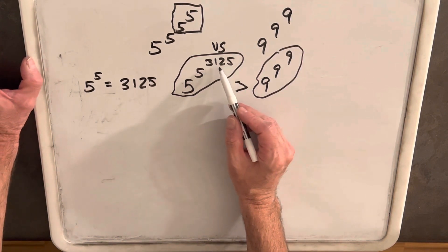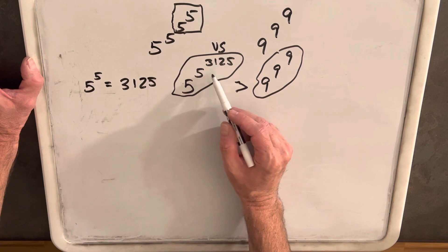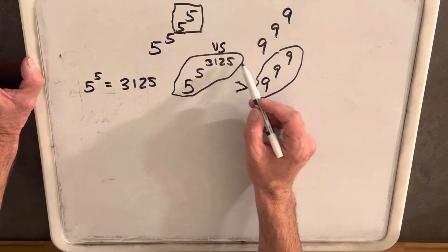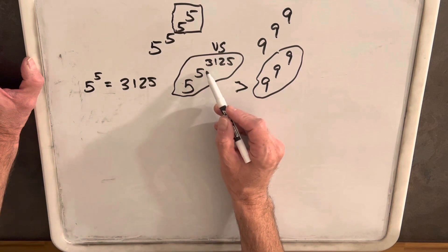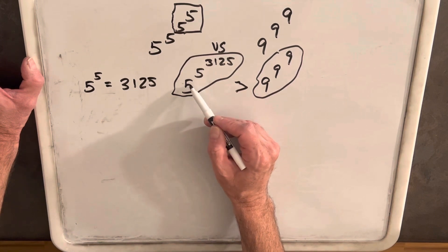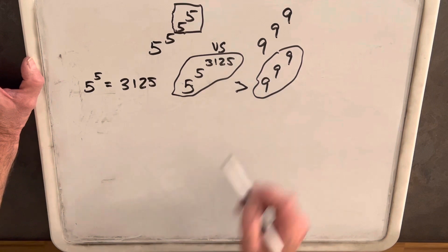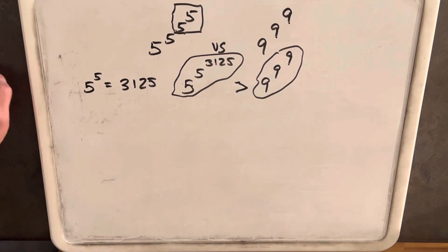And so what I want to do is if I could show that each one is greater the same way, like 3,125 is greater than 9, if I can arrange this so that each of this, this, and this is greater than what we have on the right side, then that will be enough to prove it.